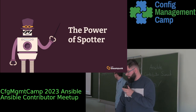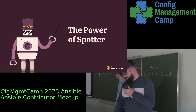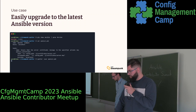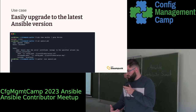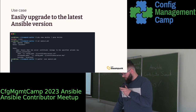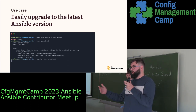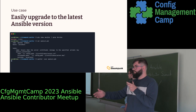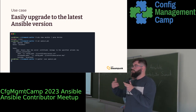Before diving into the demo, I'd like to point out some key features of Ansible Steampunk Spotter. The most important feature is that you can use Steampunk Spotter for upgrades — it has the capacity to help you upgrade your Ansible content to new Ansible versions. It will allow you to check the compatibility of your playbooks in a not-yet-upgraded environment, so you can check if your playbooks work with Ansible 2.14 even though you're still on Ansible 2.9, and get recommendations on how you must change your playbooks.